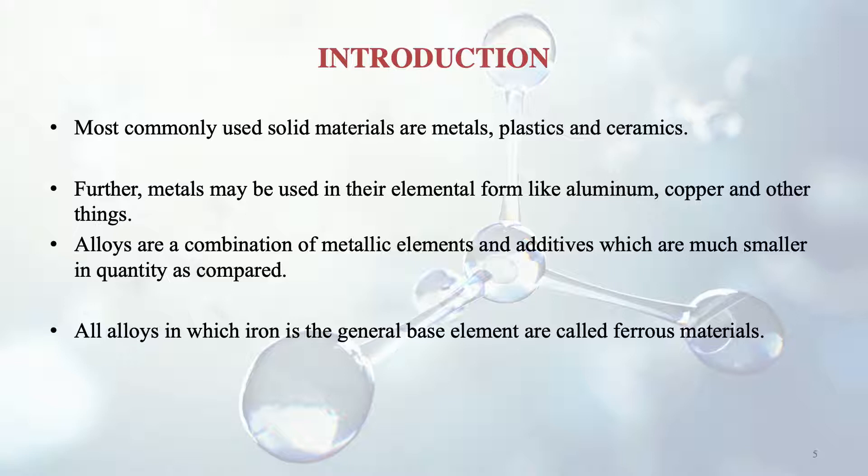For example, iron will be the main base metallic element and in addition there may be others like molybdenum and nickel in very small quantities, while iron is in large quantity. That is the alloy — a combination where at least one metal must be present. All alloys in which iron is the base element are called ferrous materials, and alloys without iron as the base are known as non-ferrous materials.